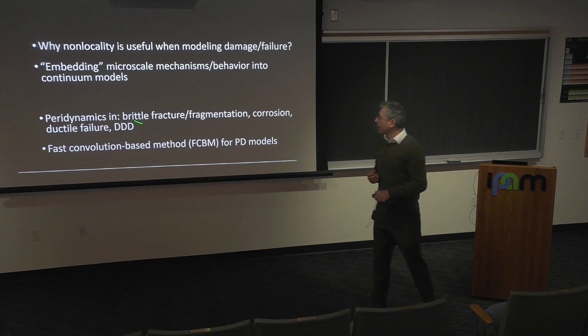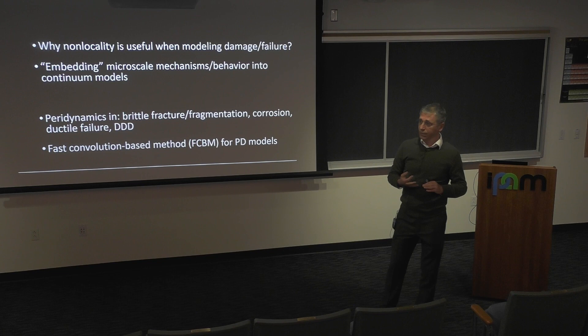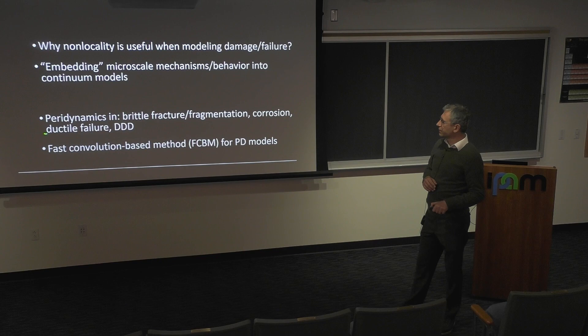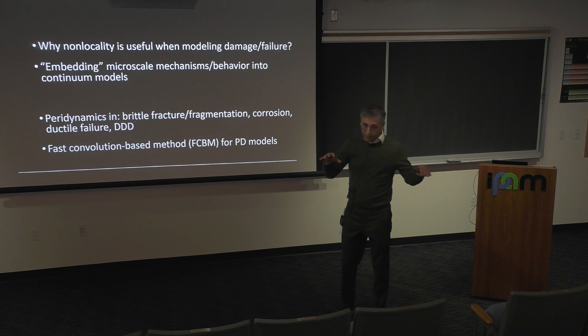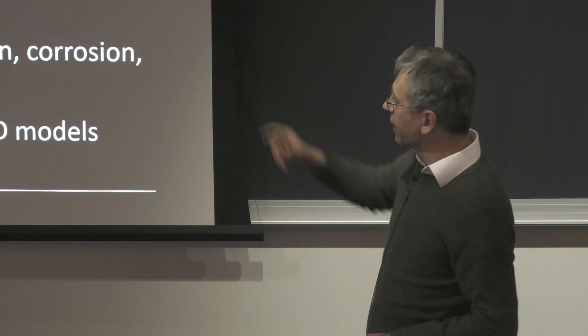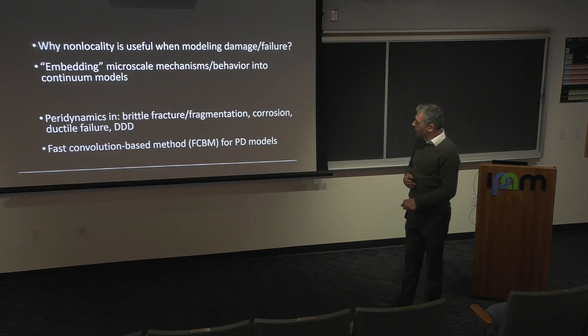We will show examples in brittle fracture, fragmentation, and corrosion. We've covered galvanic corrosion, crevice corrosion, and transgranular corrosion, and validated all of those cases with experiments quite extensively. I'll show a short example on ductile failure and discrete dislocation dynamics — interactions of dislocations with a growing crack. Towards the end I'll come back to the simulations using a fast convolution-based method for these relatively expensive non-local models.